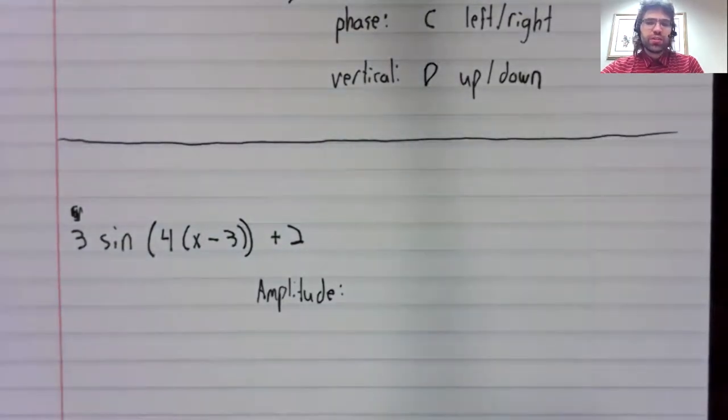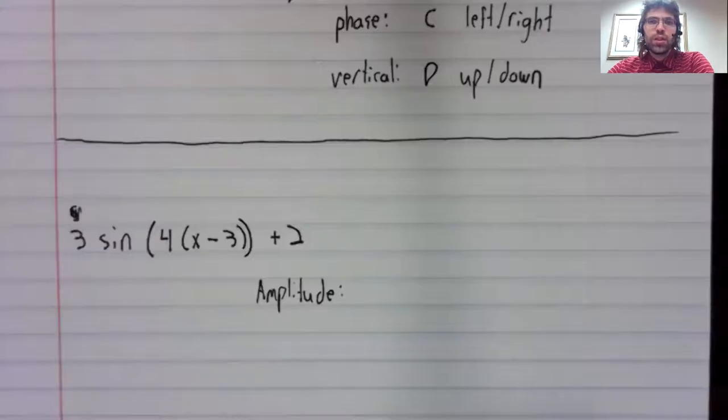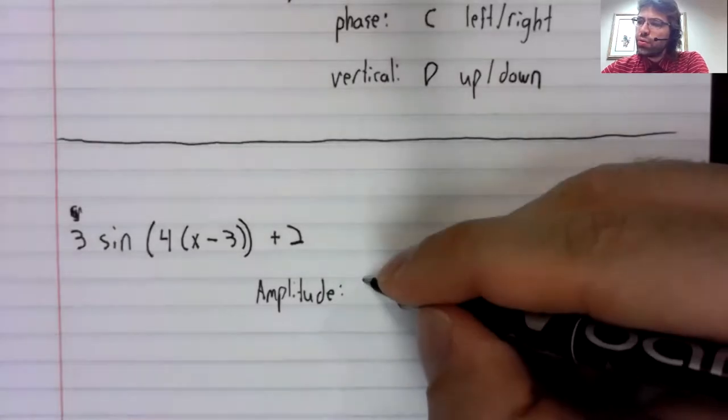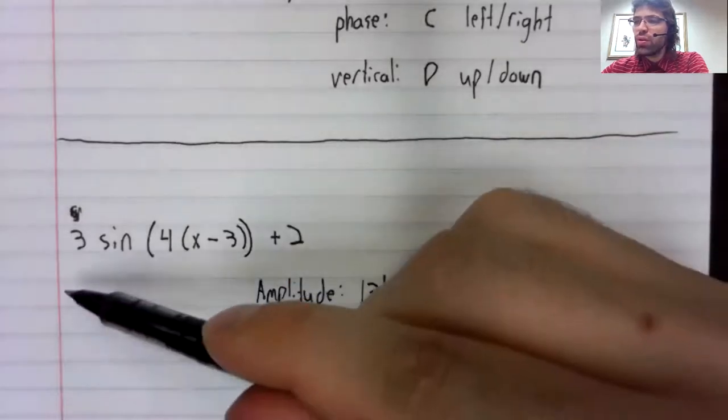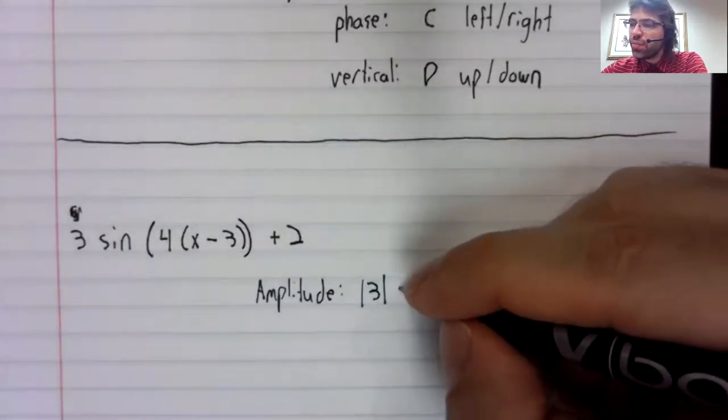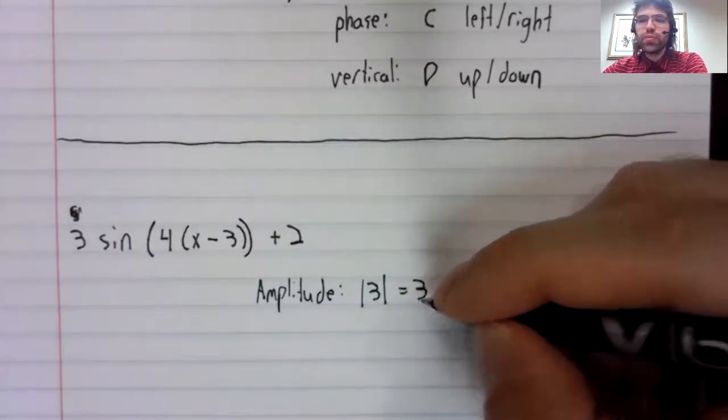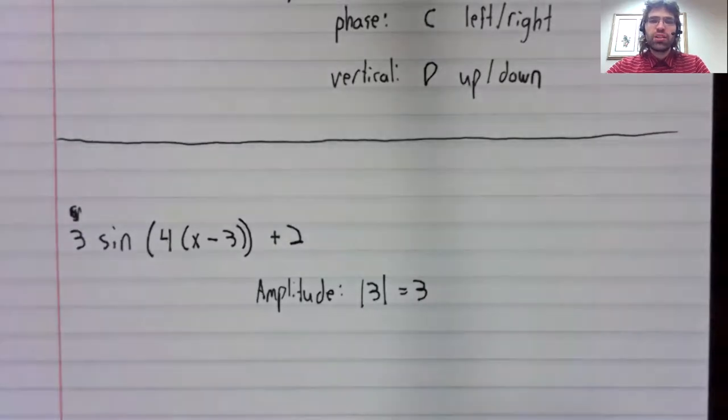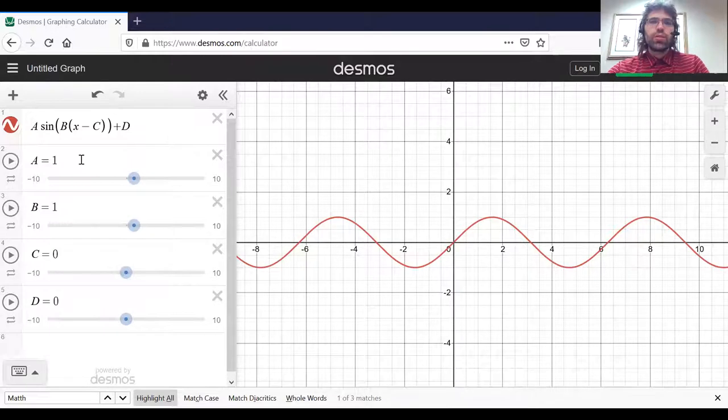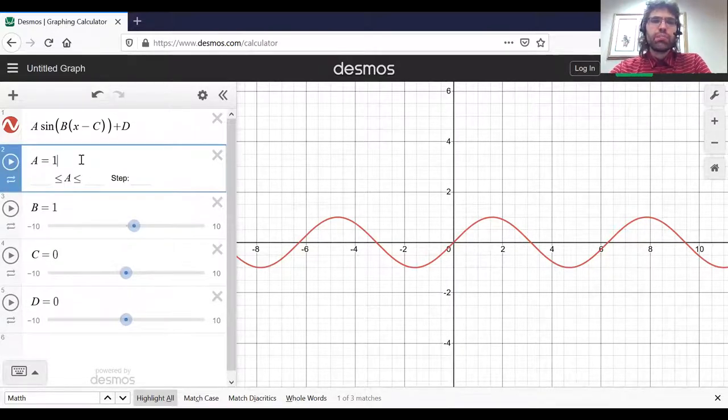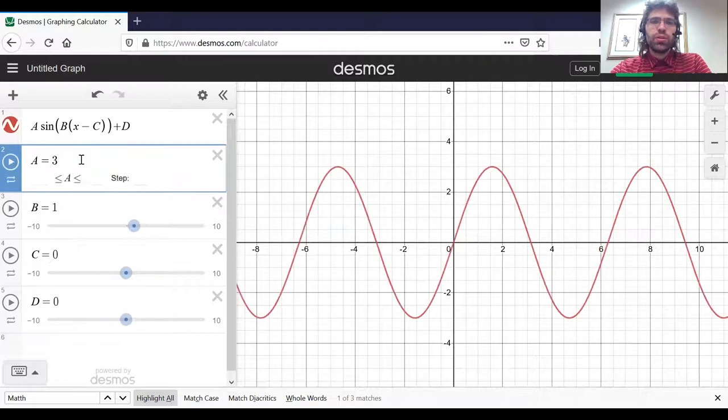And as we do, let's look at this on Desmos. The amplitude is the absolute value of three. Of course, three was already positive. Over here, here's the sine, and that amplitude turns to three.